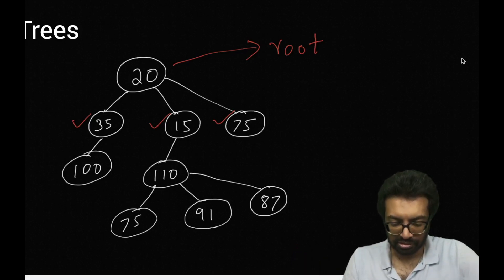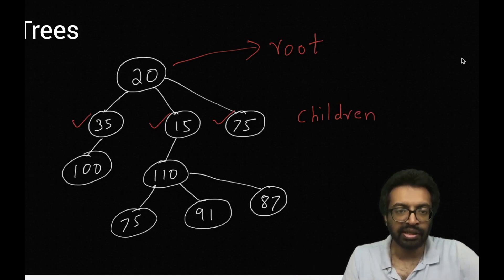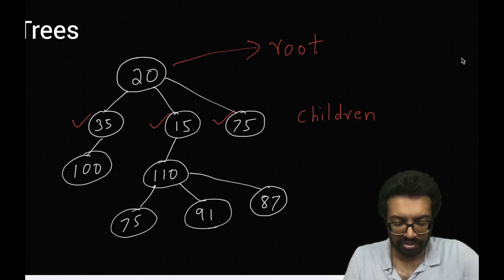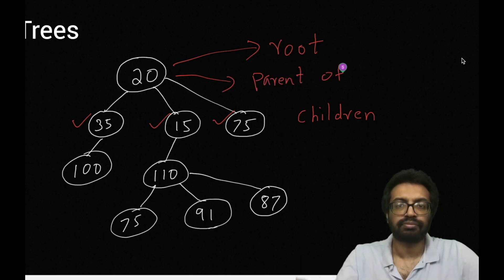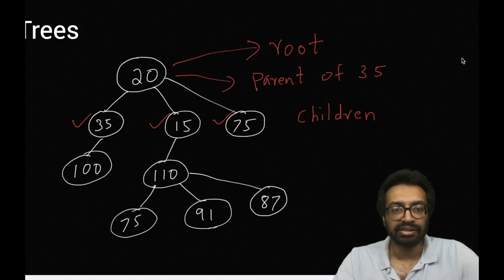20 is a parent of 35. On the other hand, 15 is a child of 20, and 75 is also a child of 20.